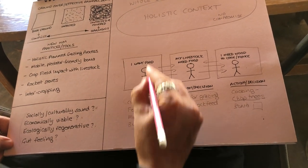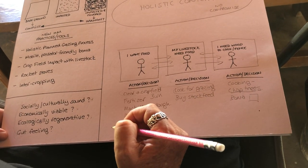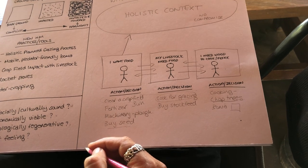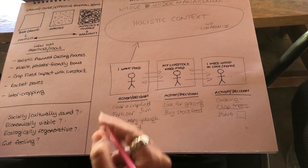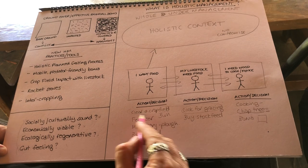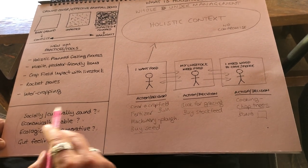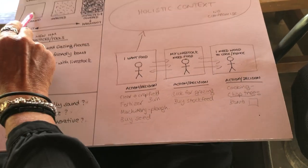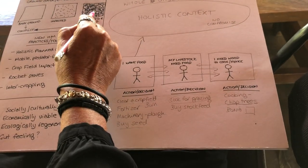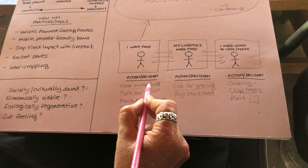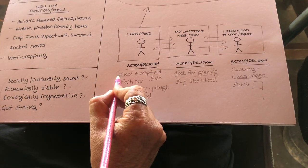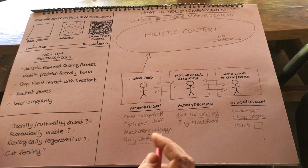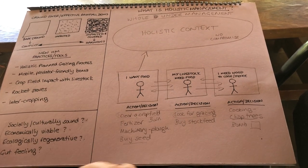Now this villager comes along and says 'I want food.' But remember, he or she has been part of developing the context for the whole community. So they check: clearing a crop field — it's not good for my neighbours, not good for me, not ecologically regenerative, it's going to lead to bare ground. But we want to go here in our lives. So they would probably find a crop field but won't clear it — they'll leave some trees or find an area without too many trees. They'll just make a better decision.